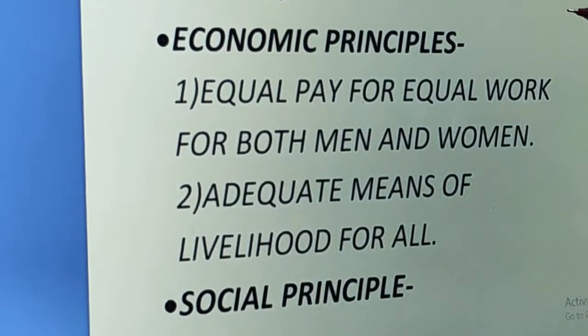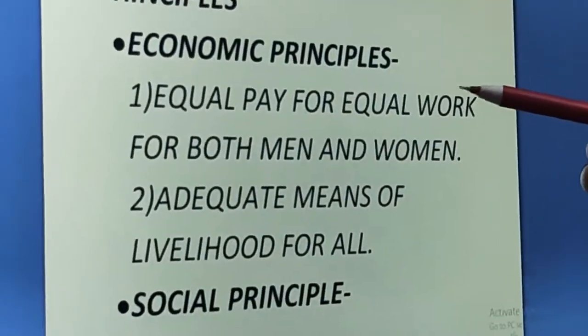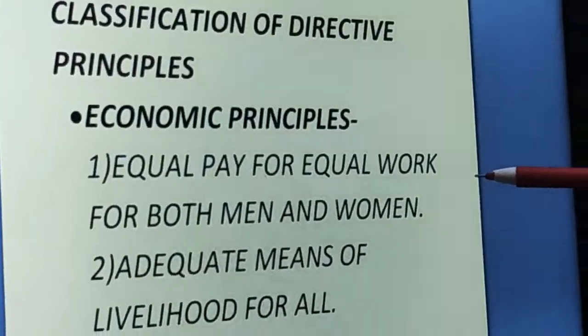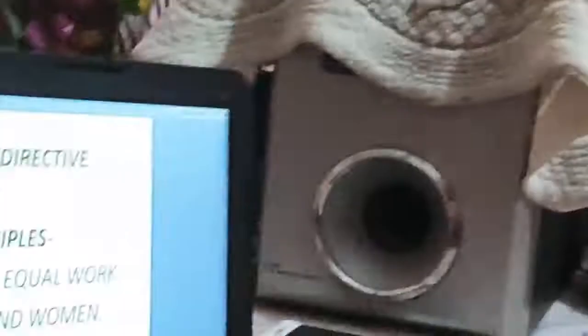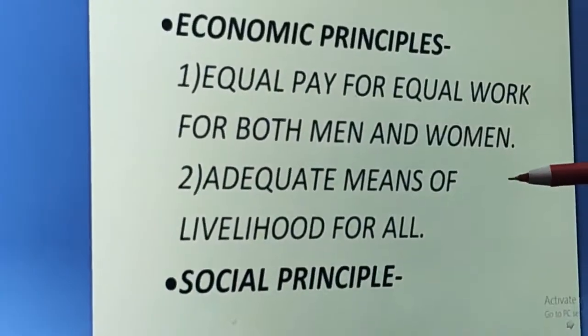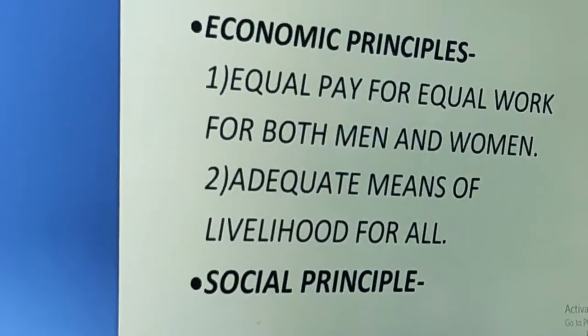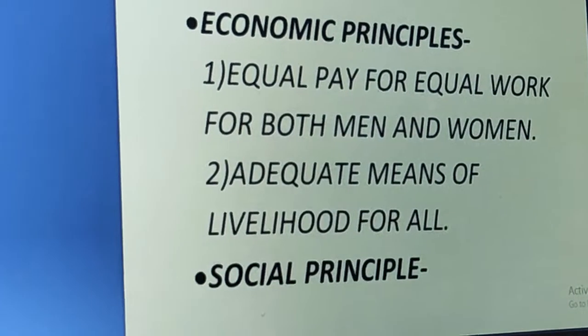The first category is economic principles. Economic principles include equal pay for equal work for both men and women — meaning no economic inequality should take place in society on the basis of caste or sex. If the same work is done by both men and women, it should be paid equally. The second economic principle is adequate means of livelihood for all, meaning every person should be given the opportunity to earn and continue their livelihood.